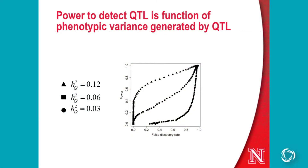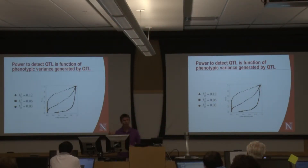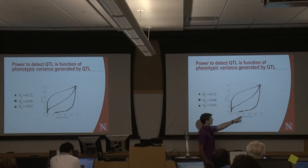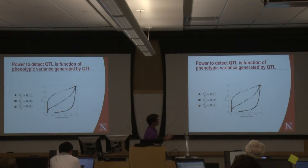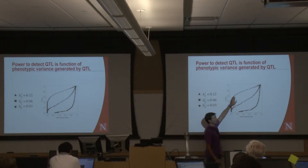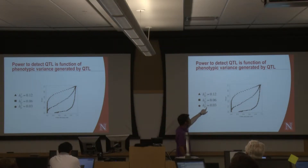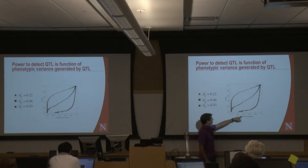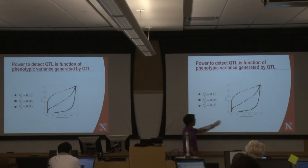You can see this in simulation results. We simulated QTL explaining 3%, 5%, or 12% of the genetic variation. This graph plots power against false discovery rate — we can increase power by lowering our statistical threshold, but that increases the false discovery rate. For large-effect QTL explaining 12% of variation, at very low false discovery rates we still have good power to detect them. For very small effect QTL, we had to dramatically increase the false discovery rate to unacceptable levels to have any power at all.